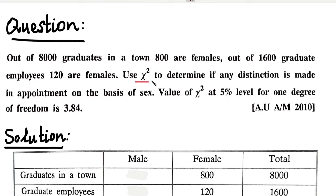This is a problem in Chi-square. In the Chi-square test, there are two types of problems: one is the goodness of fit, and the next is the independence of attributes.